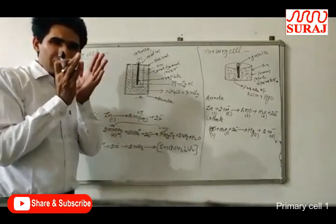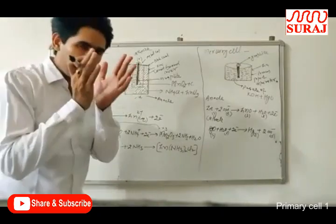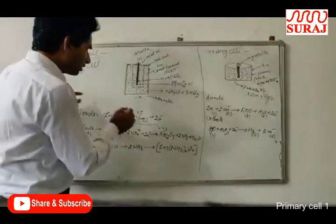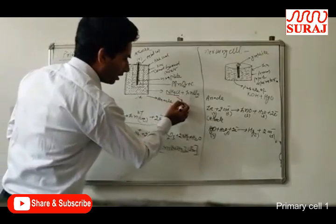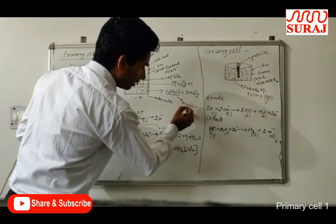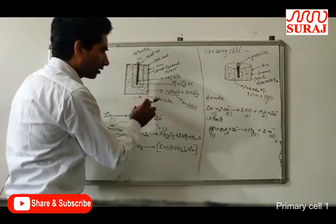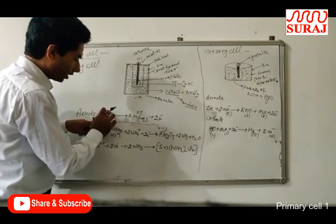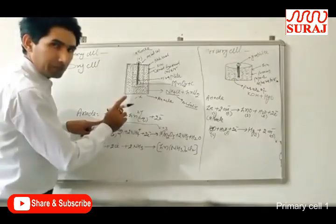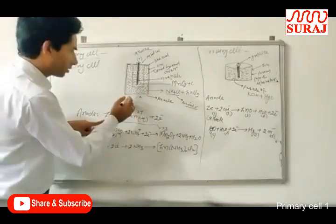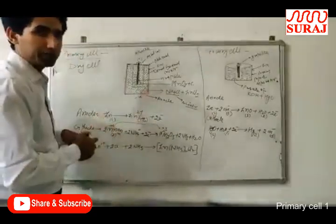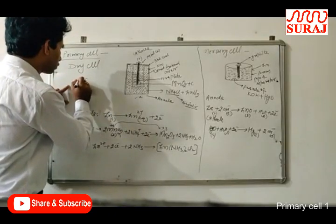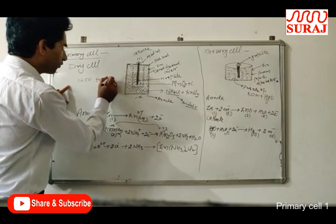This cell can become dead over a period of time even if we do not use it, because ammonium chloride is acidic in nature. This acidic ammonium chloride corrodes the zinc slowly. Zinc changes into Zn²⁺ ions, and eventually there will be no zinc container left. The dry cell gives 1.25 to 1.50 volts initially.